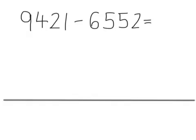Hi there, in this video I'll be demonstrating how to work out a four-digit subtraction using an empty number line. So the calculation is 9,421 take away 6,552.